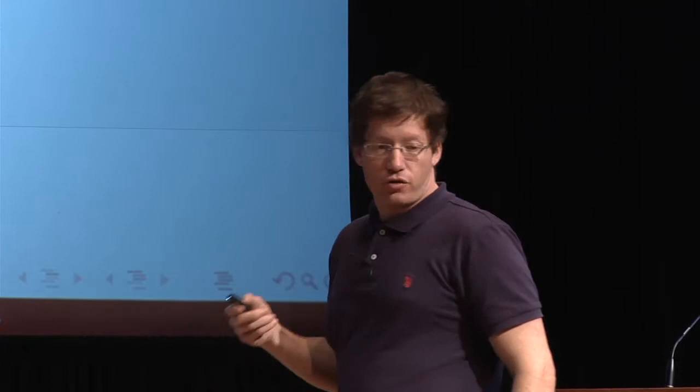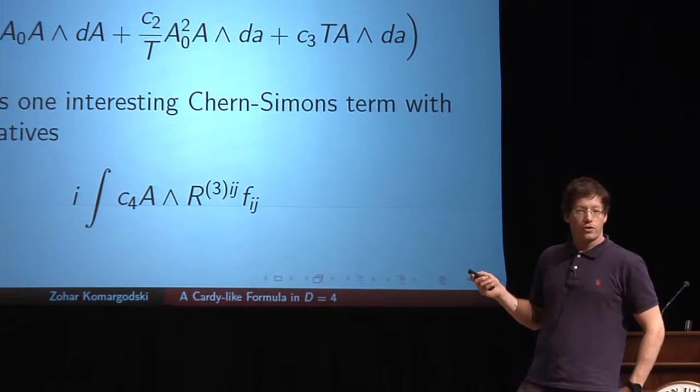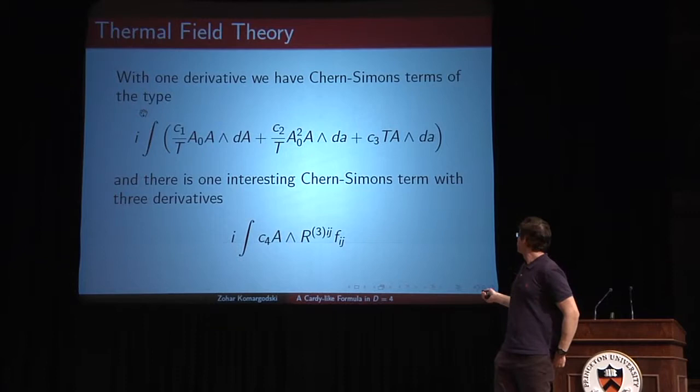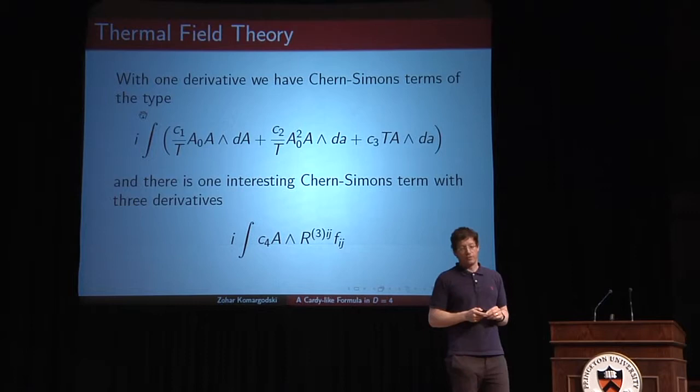You need to classify admissible effective actions in terms of these background fields. At zero derivatives, you find some function of A0 and the temperature, where A0 is the chemical potential — the component of the gauge field along the thermal circle. At one derivative, you find a bunch of Chern-Simons terms. There are three Chern-Simons terms C1, C2, and C3, plus one more with three derivatives involving the field strength of the KK photon little a, which comes from decomposing the metric on R3 times S1.